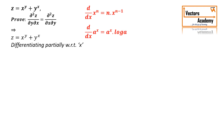When differentiating with respect to x, y is a constant term. The derivative of x raised to n is n into x raised to n minus 1, and the derivative of a raised to x (constant raised to x) is a raised to x into log a. So differentiating the first term, x raised to y gives y into x raised to y minus 1, and differentiating the second term, y raised to x gives y raised to x times log y.